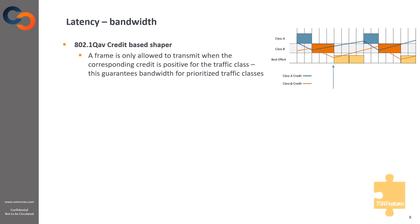The first feature I would like to talk about is 802.1 QAV, the credit-based shaper. One of the benefits is that it spreads out frame transmission and reduces bursting of class-based traffic. It also gives the possibility to prioritize bandwidth between different traffic classes. As shown in the illustration, transmission of a traffic class is only possible if the credit for a given class is positive when the transmission is ready to start. After the first frames are transmitted, the credit for both class A and B goes negative, so no transmission from either traffic class can start — they need to wait. This gives room for best-effort traffic to be transmitted. Time synchronization is not needed for the credit-based shaper.